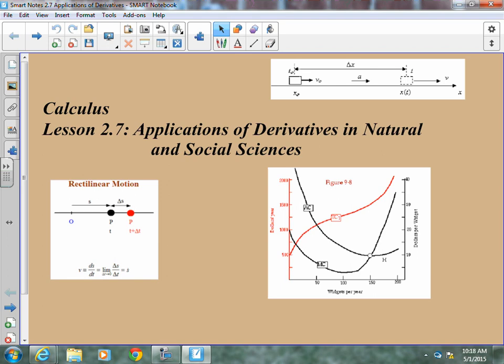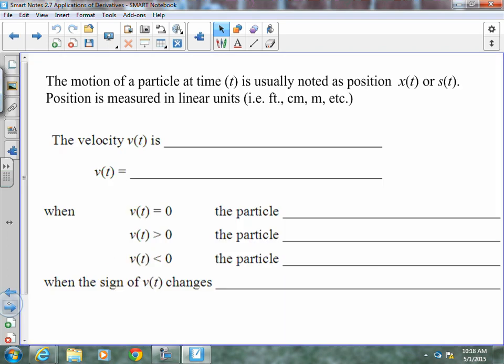but does apply to people and cars and moving objects. The motion of a particle at time t is usually denoted by x(t) or s(t), and it's measured in linear units: feet, centimeters, inches, miles, yards, whatever.